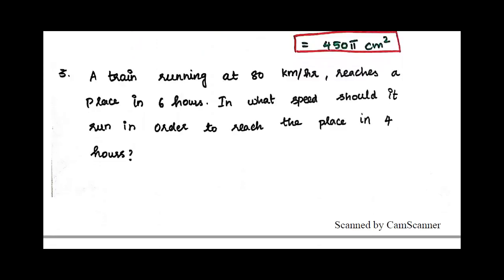Next example: A train running at 80 km per hour reaches a place in 6 hours. At what speed should it run in order to reach the same place in 4 hours? The train travels at 80 km per hour speed.